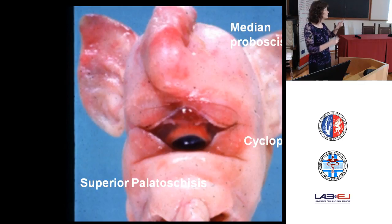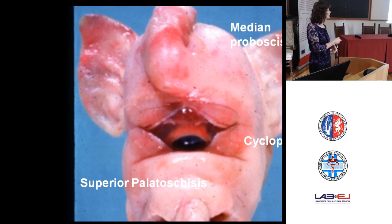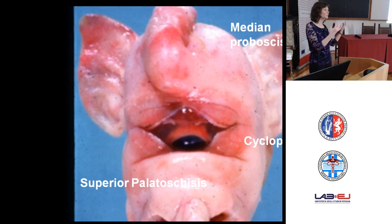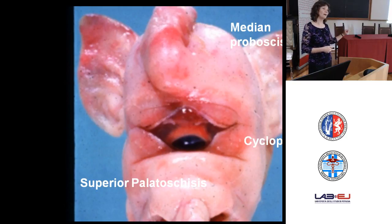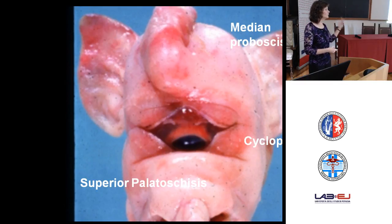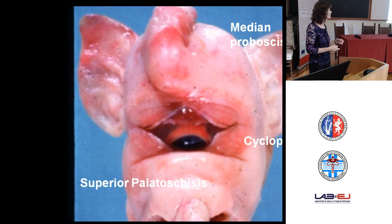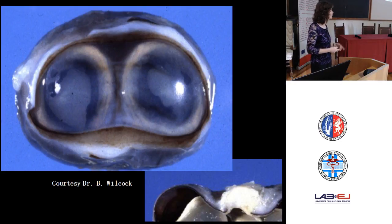Cyclopia is often associated with other facial deformities. In this pig, the mouth is malformed and there is a large proboscis. The brain is generally malformed as well. In pigs, classical swine fever — hog cholera — is an infectious cause that when affecting the sow at a very early stage of gestation can culminate in something like this. Nutritional issues can also potentially lead to similar problems.